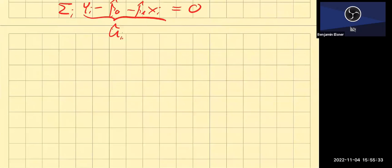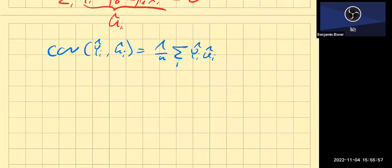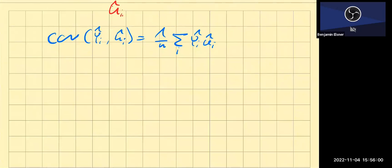So we can rewrite the covariance as follows: the covariance of the fitted values with the residuals is only that first part — 1/n times the sum of ŷᵢ times ûᵢ. That's fitted values times the residuals. That's all the covariance is. That's what we've shown so far.